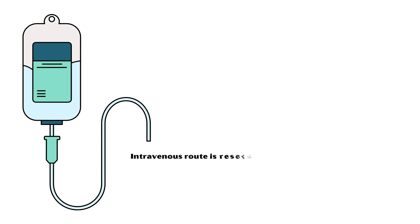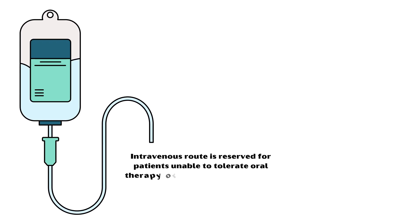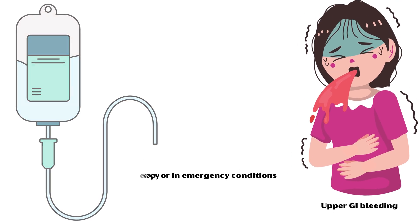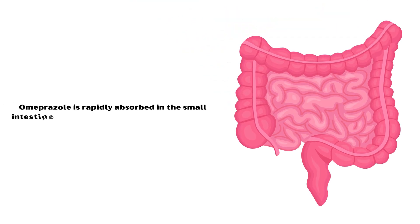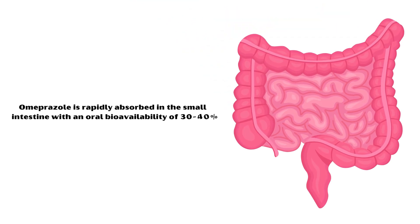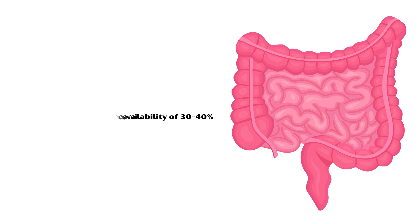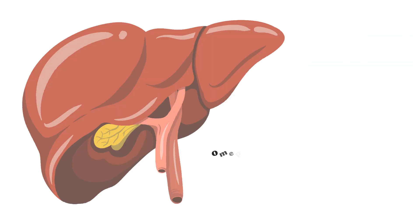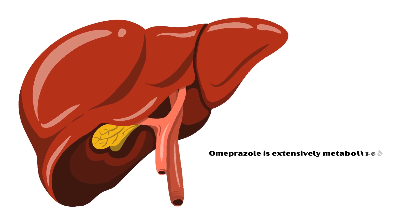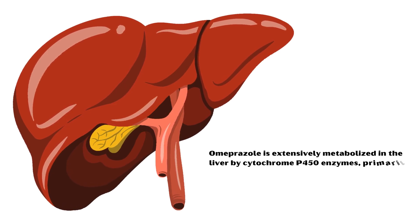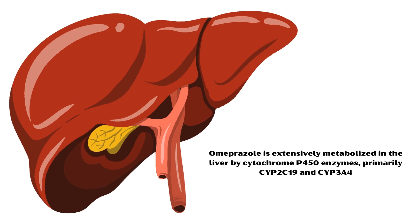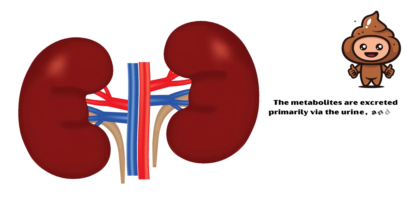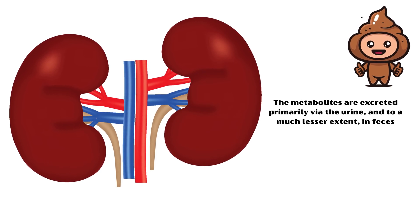Intravenous route is reserved for patients unable to tolerate oral therapy or in emergency conditions like upper gastrointestinal bleeding. Omeprazole is rapidly absorbed in the small intestine with an oral bioavailability of 30 to 40%, and should be taken before meals to prevent delays in absorption. It is extensively metabolized in the liver by cytochrome P450 enzymes, primarily CYP2C19 and CYP3A4, and the metabolites are excreted primarily via the urine and to a much lesser extent in feces.